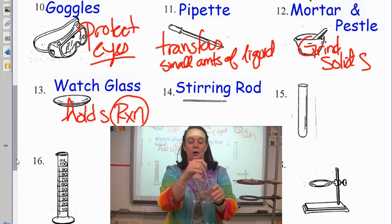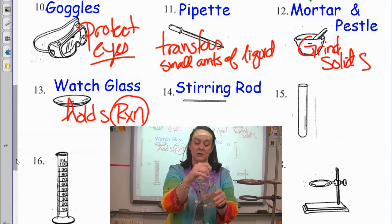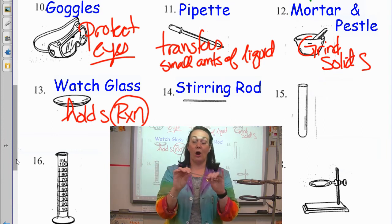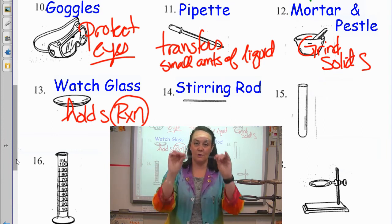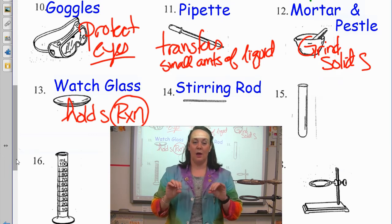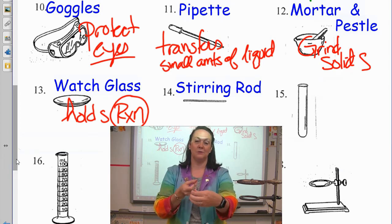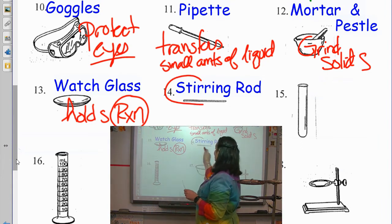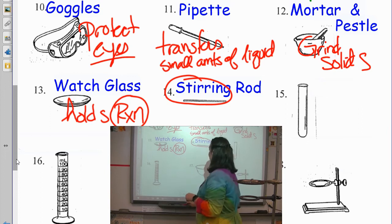If we're trying to dissolve sugar or dissolve something in a solution here, you always have a stirring rod. They are glass, so you want to be very careful with them. When you put them down on a countertop, don't put them parallel. You always want to put it perpendicular because they do love to roll. So, it is for stirring. That one's a tough one.